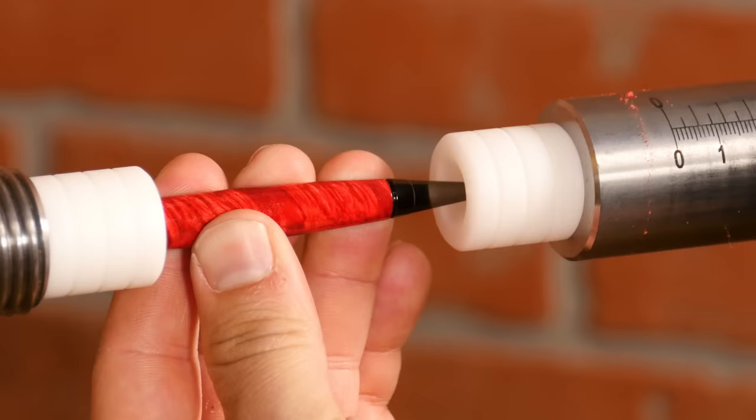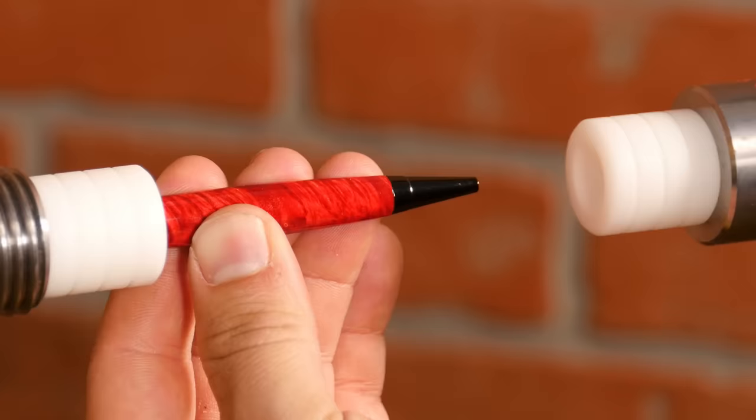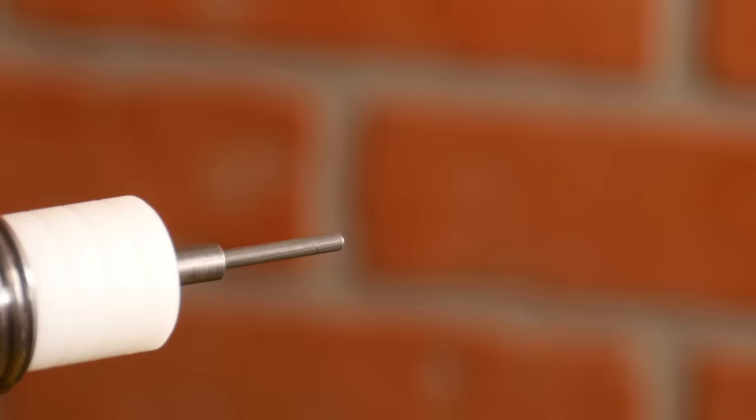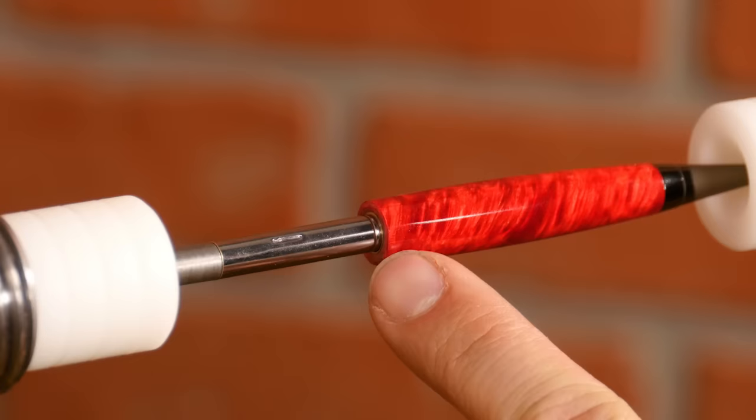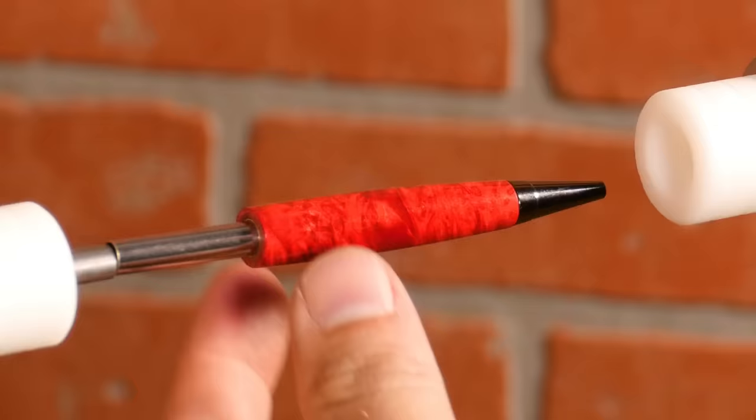If a part gets pressed in at an angle, it can split your turning or crack the CA finish, so use precision here and avoid any mistakes. And take special care when pressing in the twist mechanism. Just press until the indent is flush with the edge of the tube. This is where the Pen Ultimate comes in handy, giving you very fine control by simply rotating the hand wheel on the tail stock.